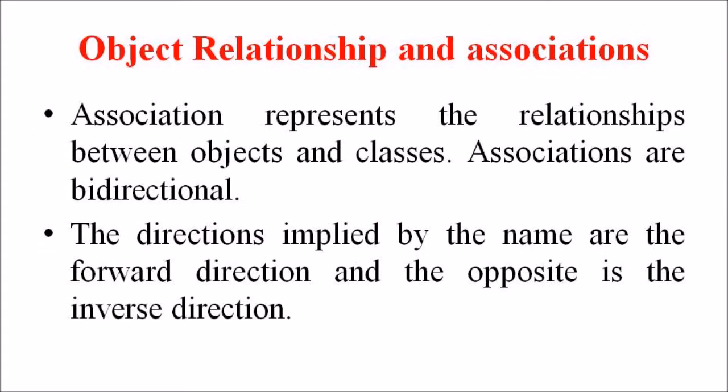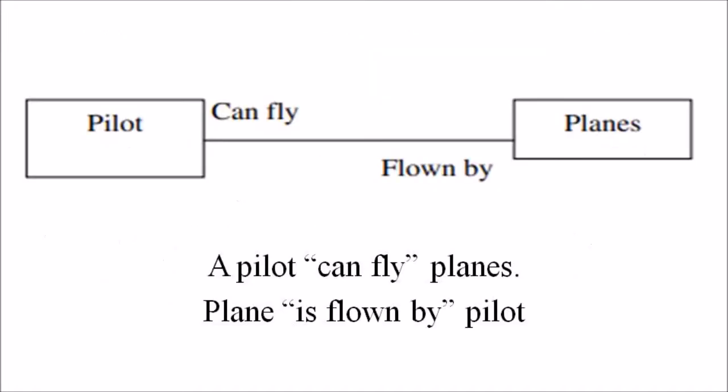First of all, we are considering the term association. Association represents the relationship between the objects and classes. Associations are bi-directional. The directions implied by the name are the forward direction and the opposite is the reverse direction. Here we can see a pilot can fly planes. The inverse of this relation is the plane is flown by the pilot. So for every object we can see some relationships do exist.